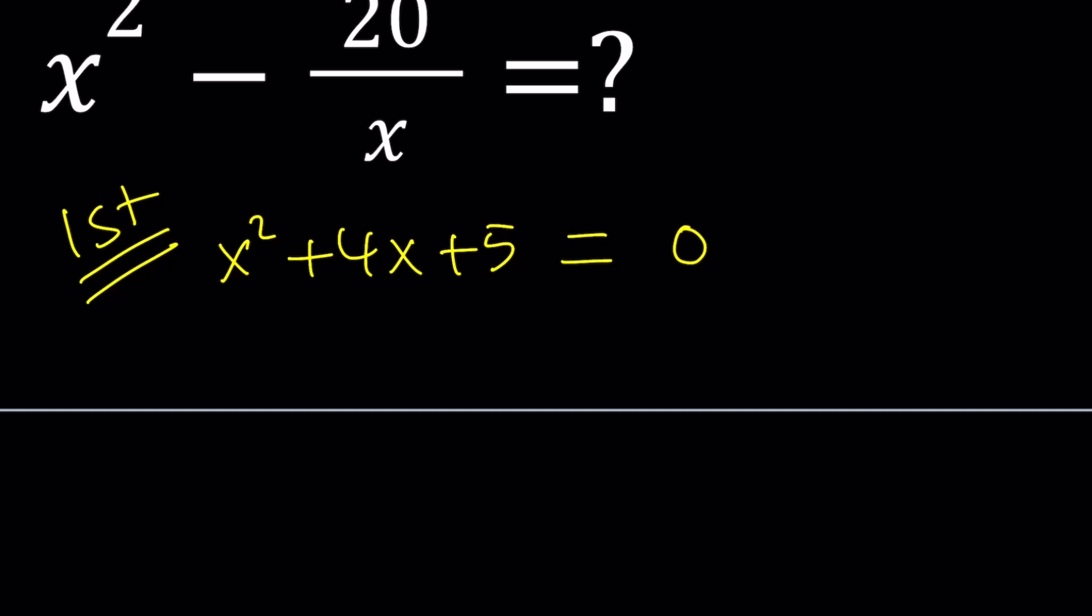This equation is not factorable, by the way. Make no mistake, because you can't find two rational numbers or integers whose product is 5 and whose sum is 4. If the 5 and 4 switch around, then yes, you can factor it.